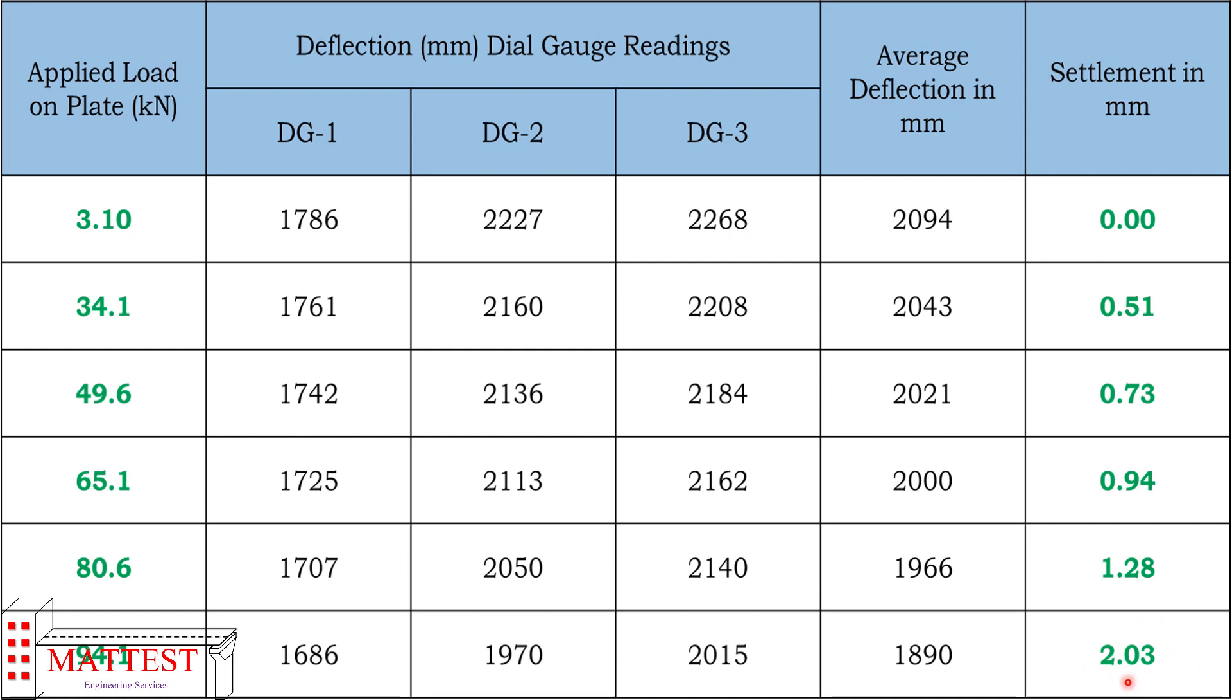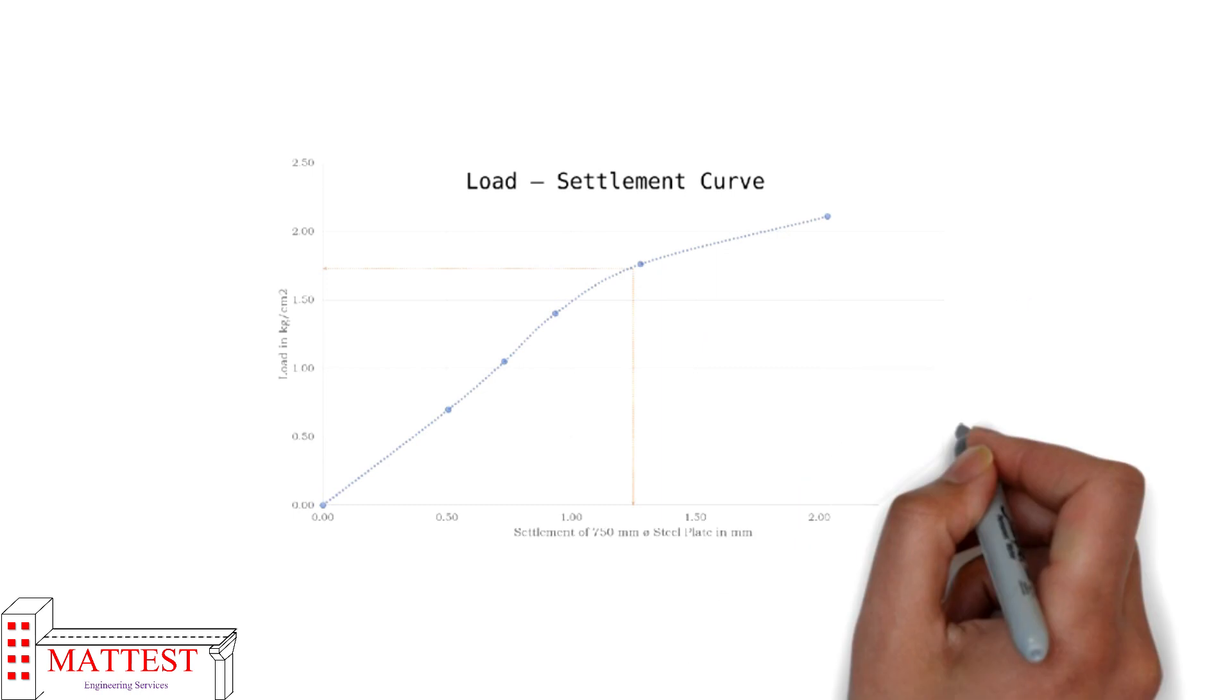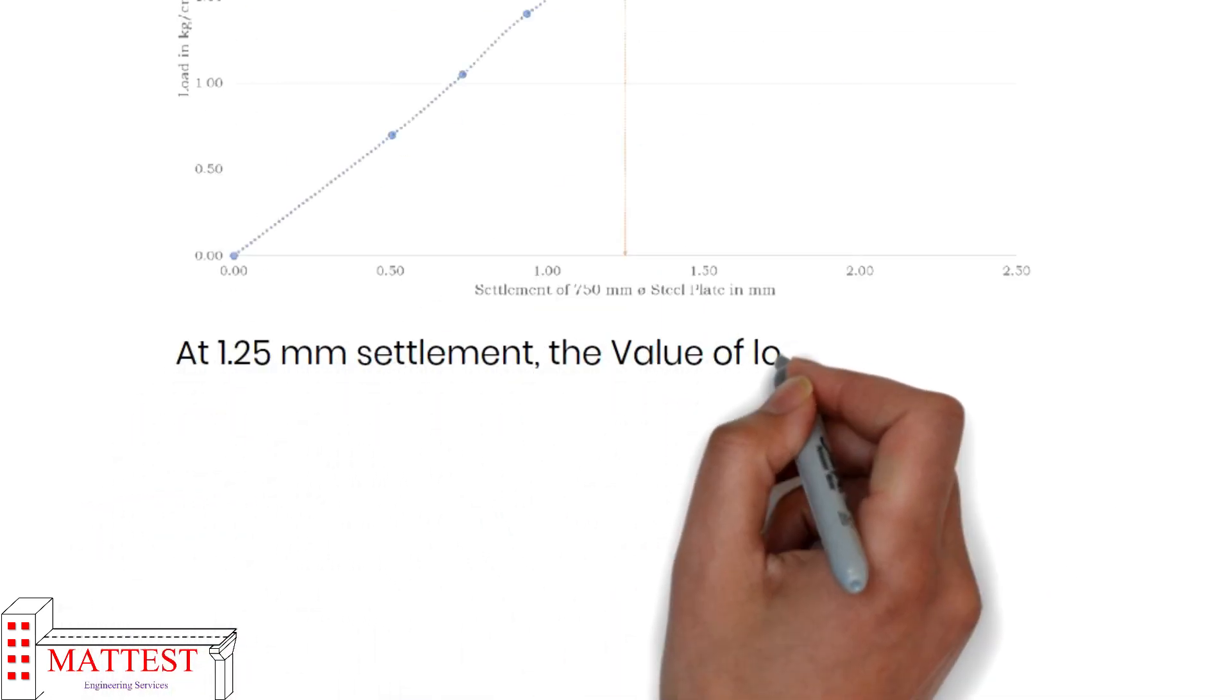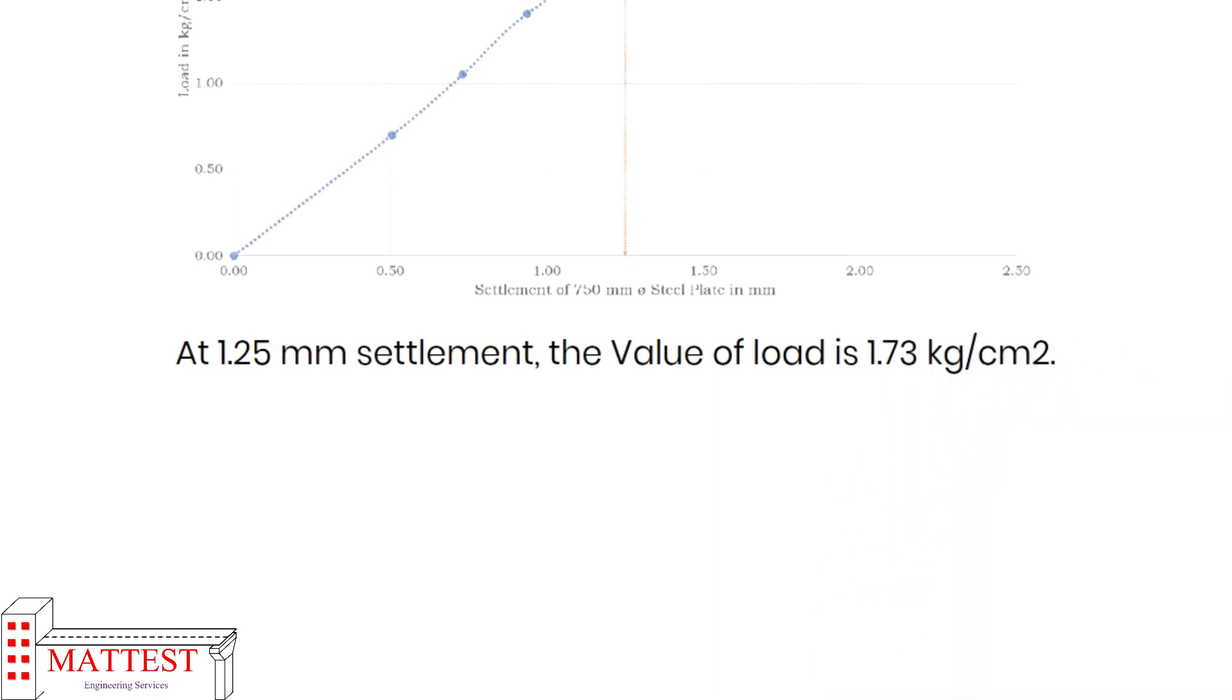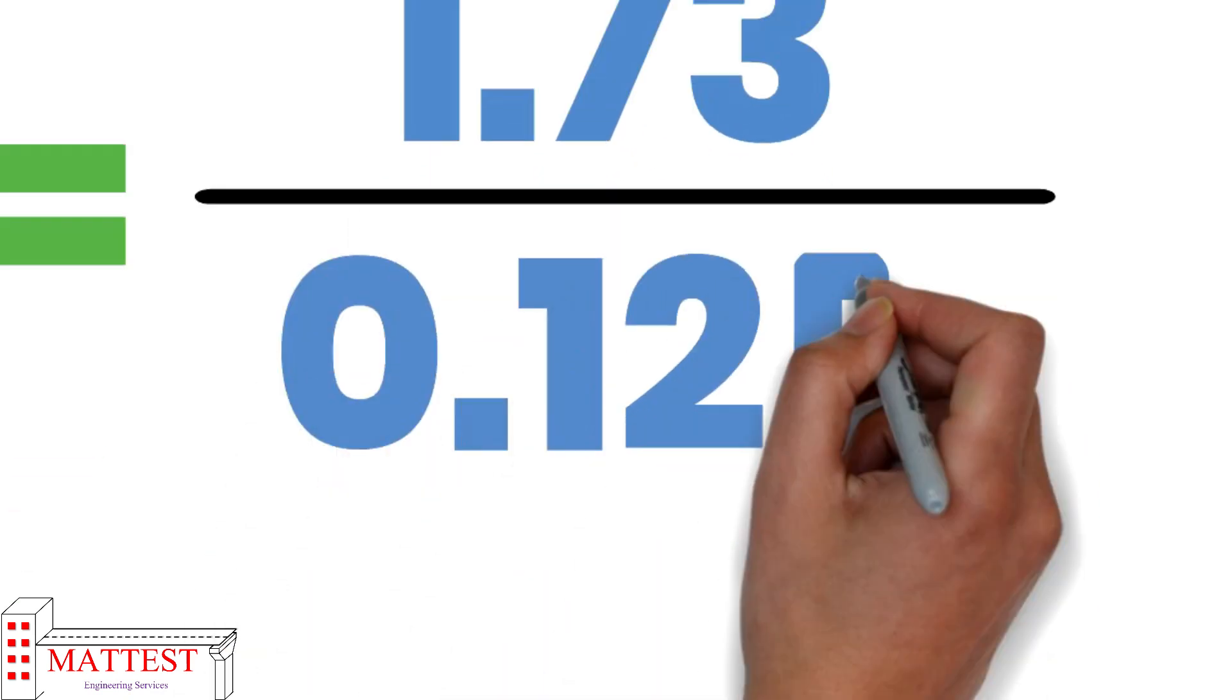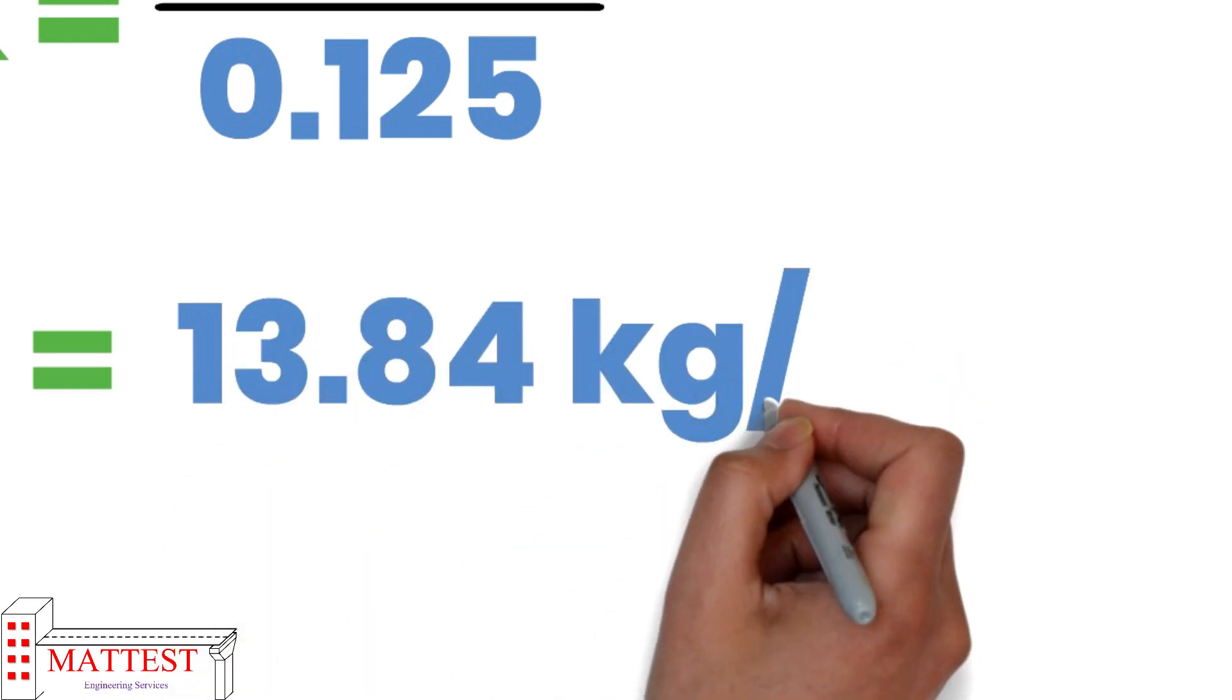Next the graph is plotted between applied load versus settlement. But as per IRC 58, the k value should be measured at 1.25 mm settlement. Hence at 1.25 mm settlement, the value of load is 1.73 kg per centimeter square. Therefore the value of k equals 1.73 divided by 0.125 and that equals 13.84 kg per centimeter cube.